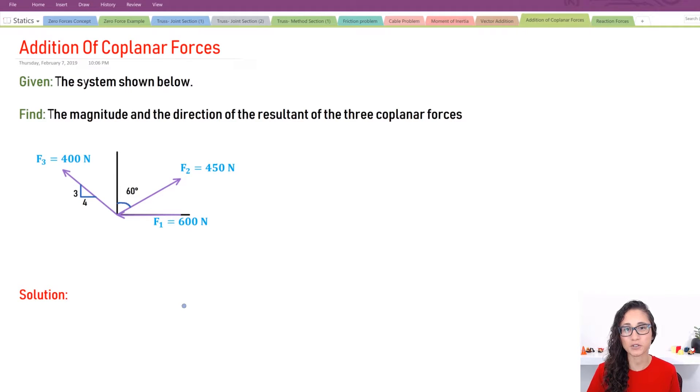Okay guys, so we're given three coplanar forces and we need to calculate the resultant force, which means the summation of these three forces and also its location. Where is it located with respect to the x-axis?